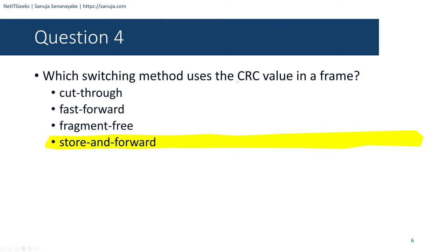Question number twenty-two: Which frame forwarding method receives the entire frame and performs a CRC check to detect errors before forwarding? Options are cut-through, store-and-forward, fragment-free, and fast-forward. Since fast-forward and fragment-free are types of cut-through switching, all three are similar. The answer must be store-and-forward, because there is enough time for store-and-forward switching to check the CRC value.